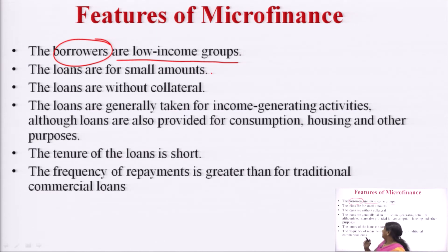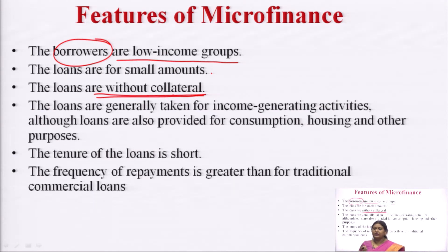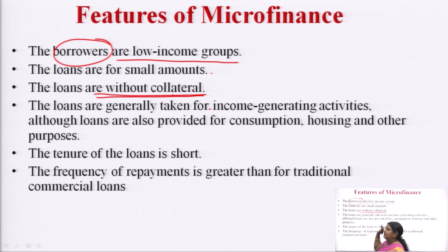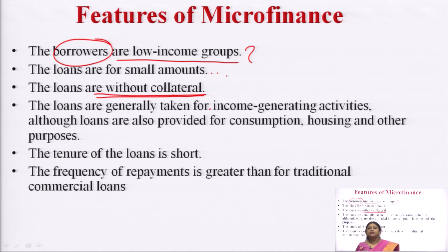The third thing, which is very important and which makes microfinance different from other financial services, is that it is without collateral. Collateral means something kept as guarantee. When we go for bank finance — auto finance or house finance — for every loan we have to keep certain collateral as an asset. But when we talk about this low income group, they do not have anything to keep as collateral. In that case, we have to give them loans without any collateral, and this makes it different from other finances.